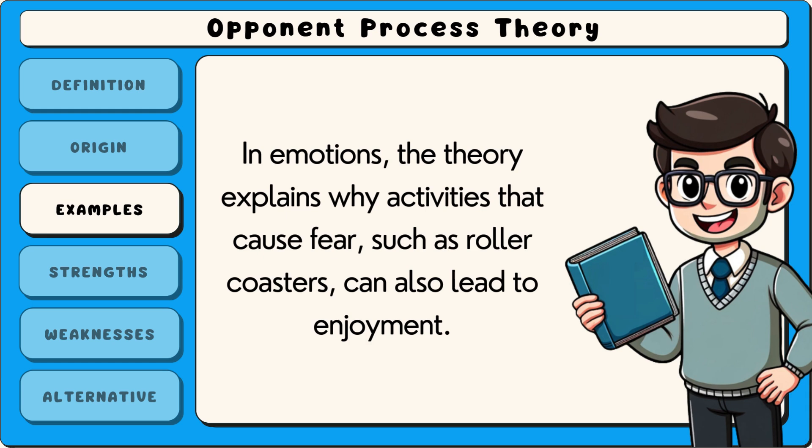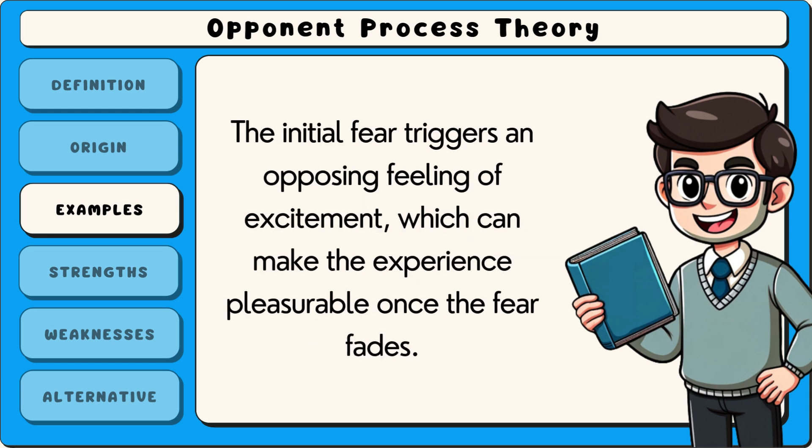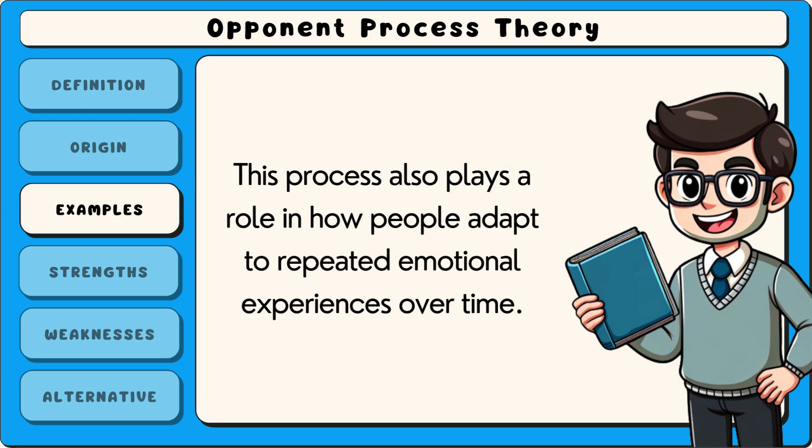In emotions, the theory explains why activities that cause fear, such as roller coasters, can also lead to enjoyment. The initial fear triggers an opposing feeling of excitement, which can make the experience pleasurable once the fear fades. This process also plays a role in how people adapt to repeated emotional experiences over time.